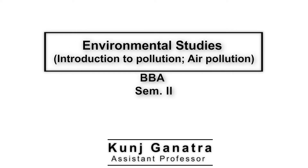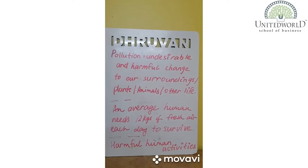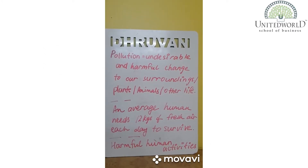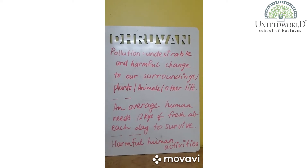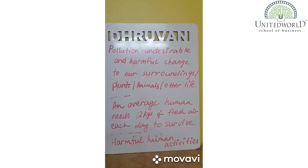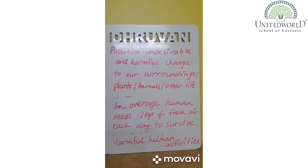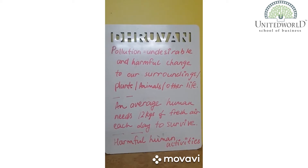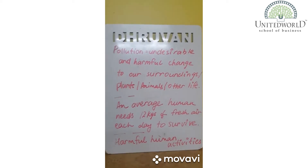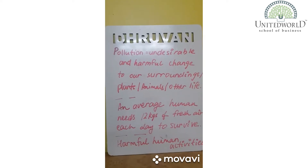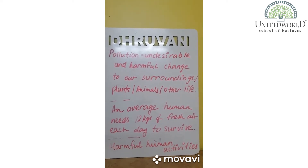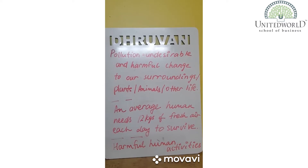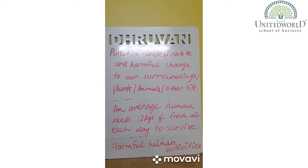Welcome back, students. We begin Unit 5, which is known as Pollution. Pollution is an undesirable and harmful change to our surroundings — to the plants, to the animals, and to all other life present on Earth. The book notes that every single day an average human being needs about 12 kg of fresh air to survive.